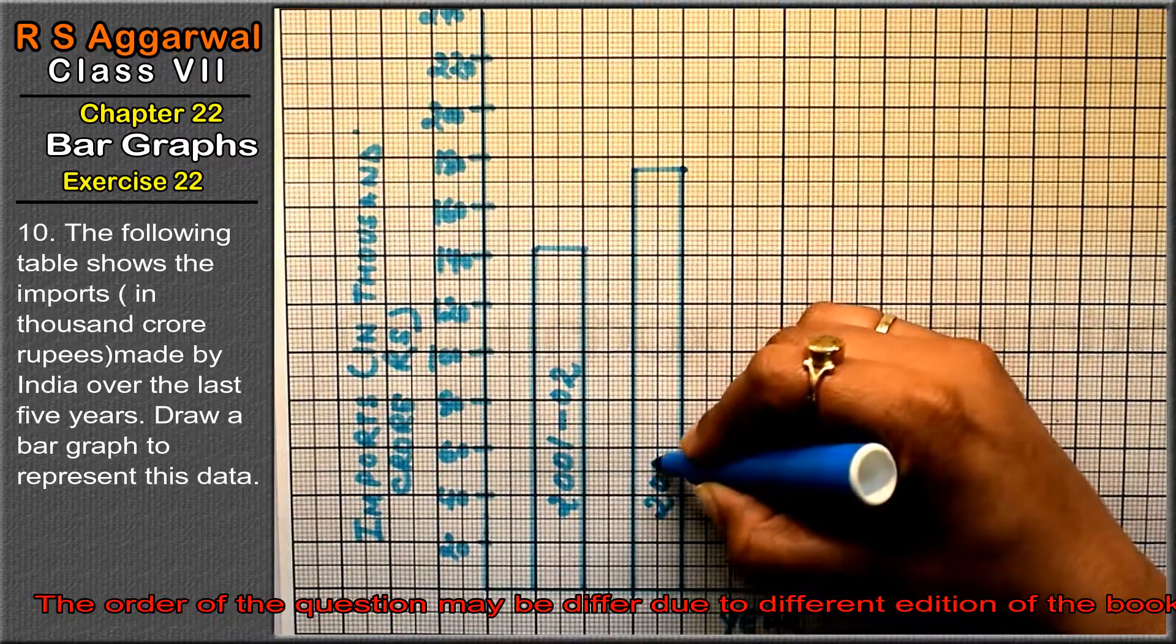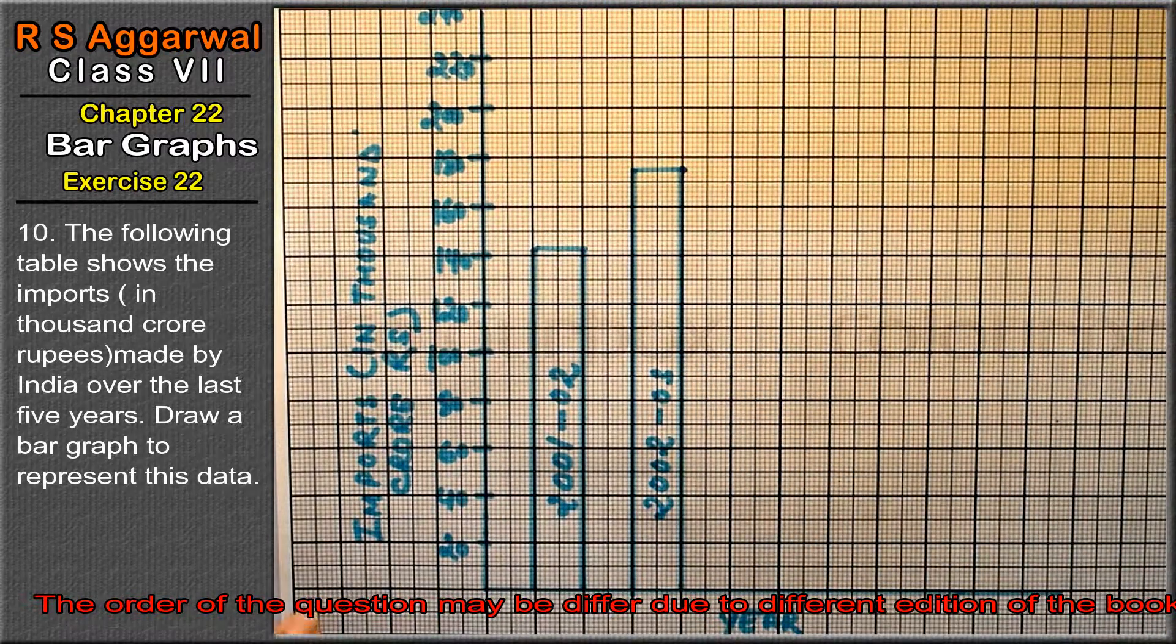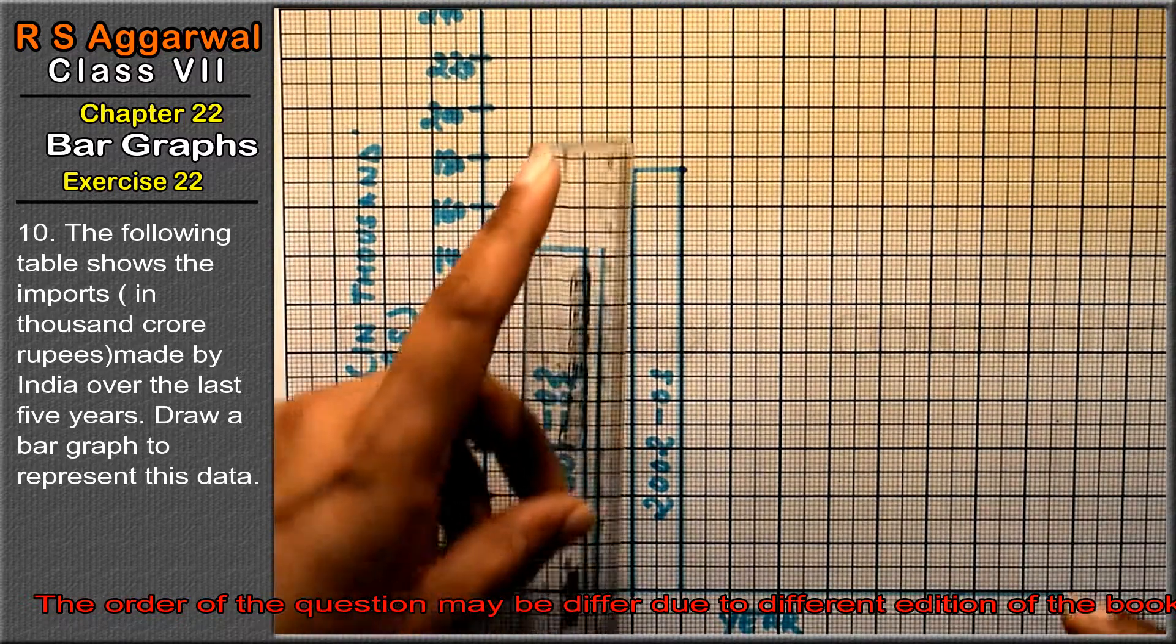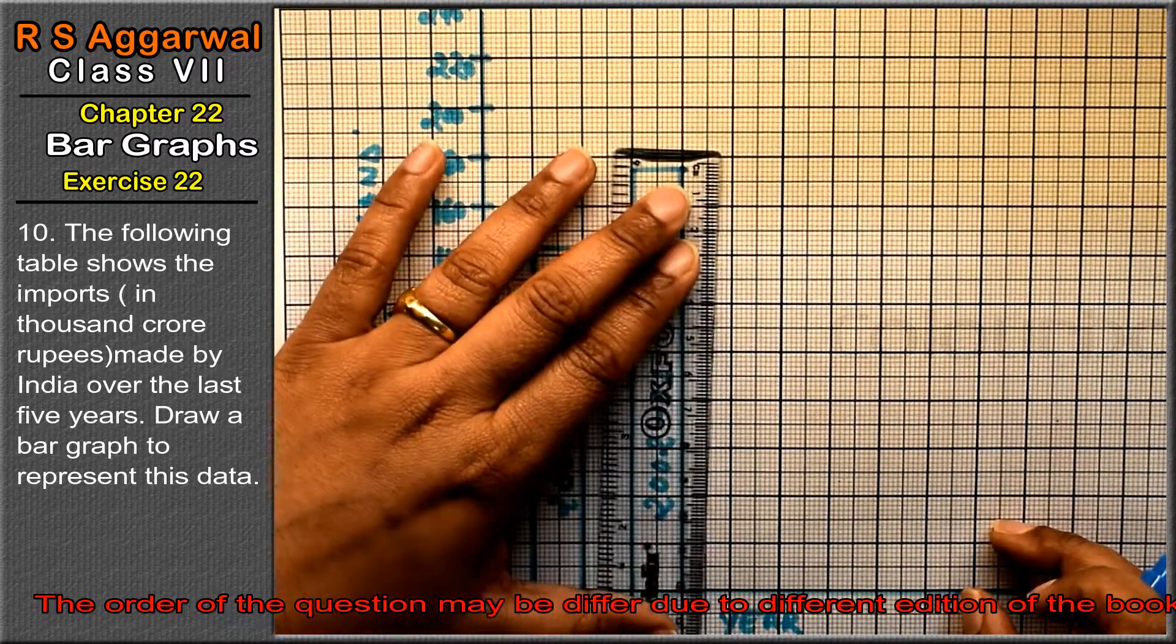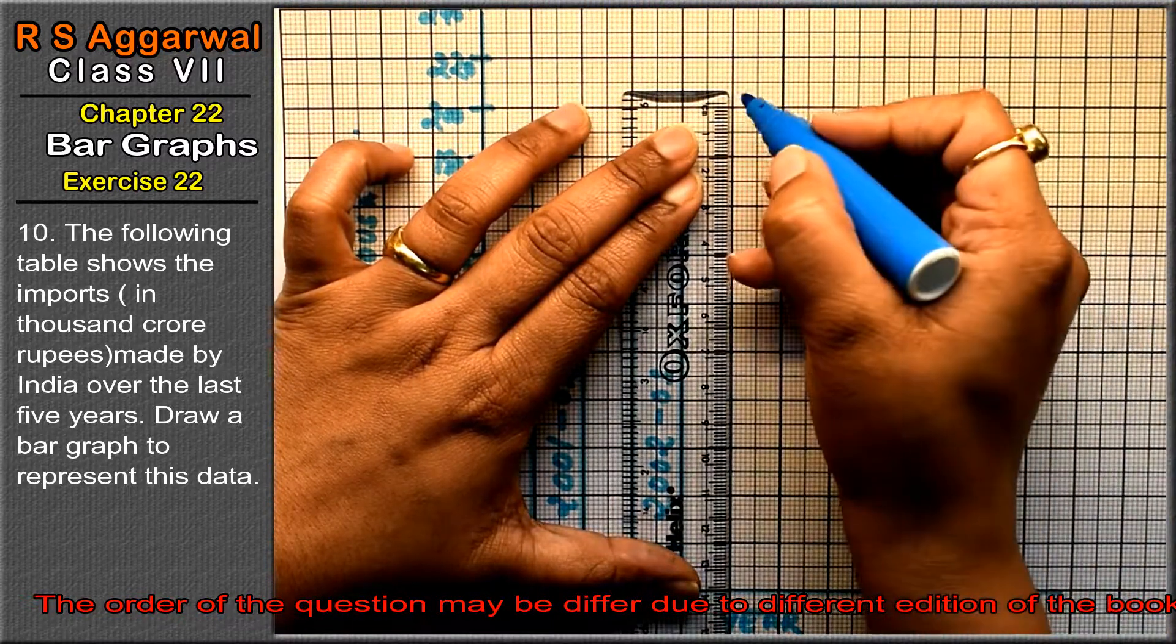2003-04 is 204, which needs 102 blocks. We go to 100, then 2 more blocks above.